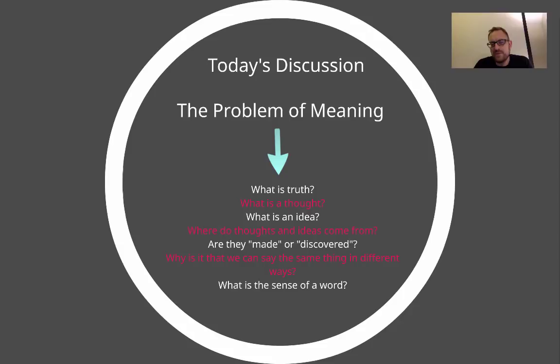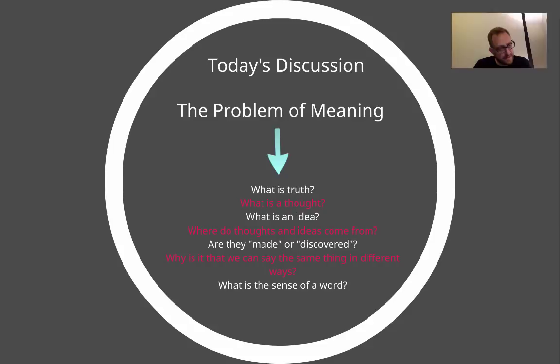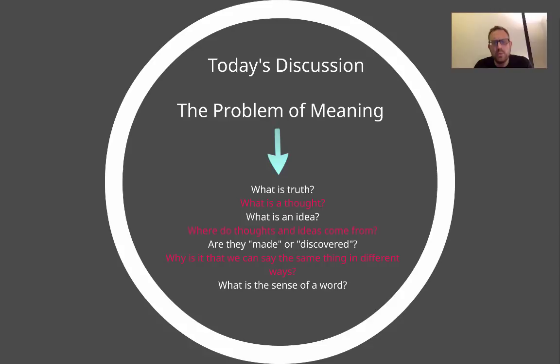When you're learning the Pythagorean theorem — A squared plus B squared equals C squared — one of the questions you could ask is: are you learning something that was constructed by humans or something that was discovered about nature by humans? What exactly is the mathematician doing? And what is the logician and philosopher doing? Another question is: why is it that we can say the same thing in different ways? And related to that is the question of what exactly is the sense of a word — we'll see Wittgenstein talk about nonsense later in the course.